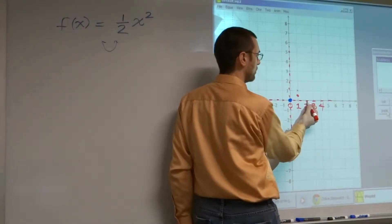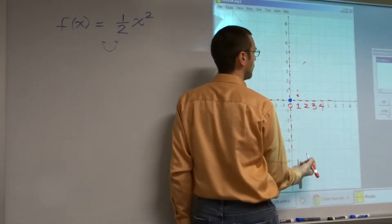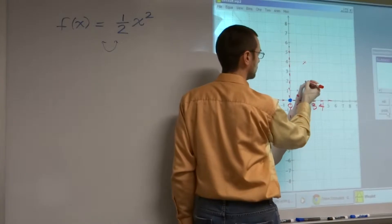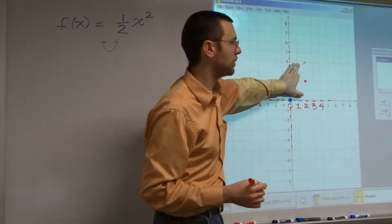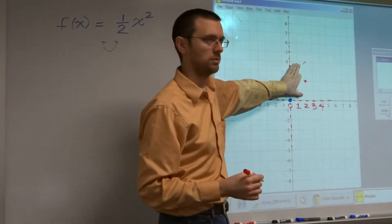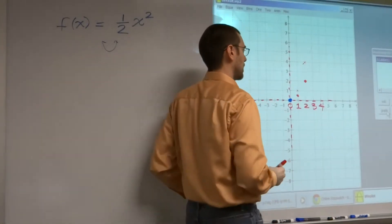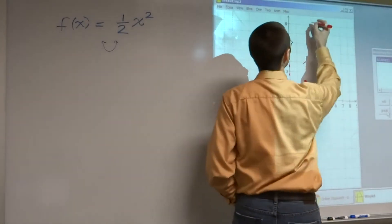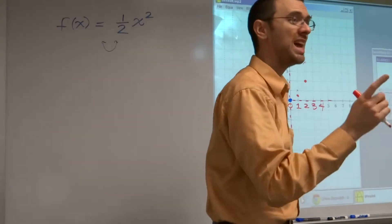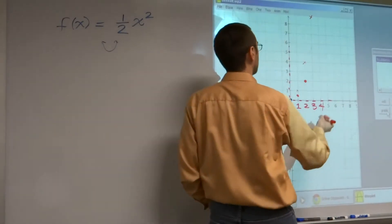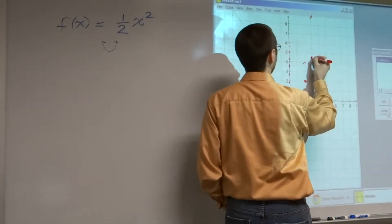What's 2 squared? 4. Two squared is 4. What's half of 4? 2. Do you see how you've got a compression by a factor of one-half? If we have 4 — 3 squared is 9, so it's only going to go to — what's half of 9? Half of 9 is 4 and a half.